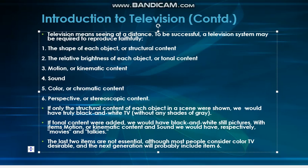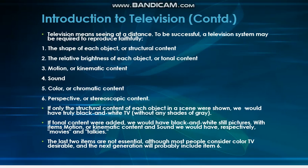The last two items — color and chromatic content, and perspective or stereoscopic content — are also important. Although most people consider color to be desirable, that is the color TV we see in modern days. The next generation will probably include item six, perspective or stereoscopic content. Our modern televisions are now quite capable of displaying stereoscopic content, and that is the new generation television.